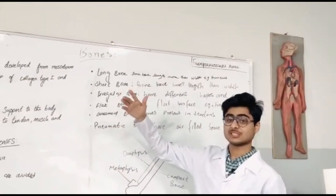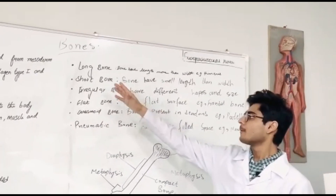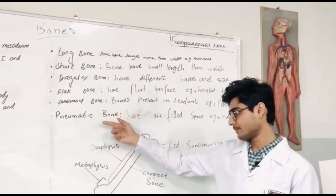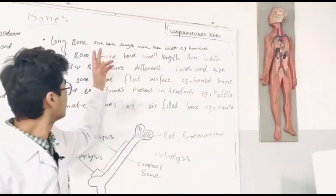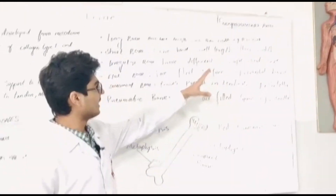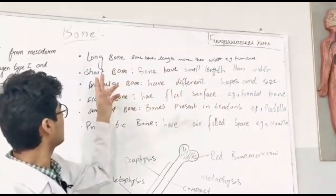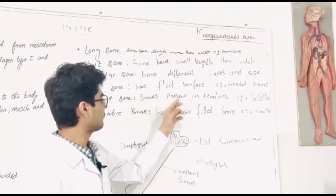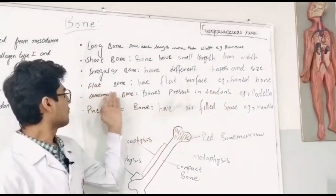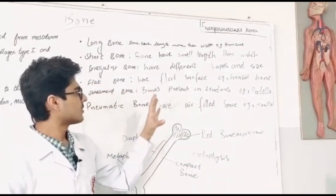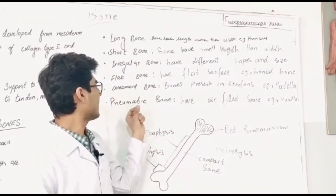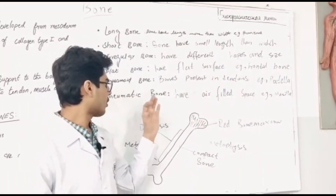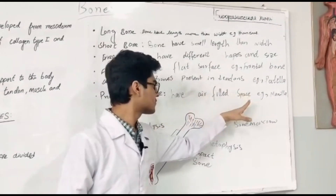The categories of bone are: long bone, which has more length than width (e.g., humerus); short bone, which has smaller length than width; irregular bone, which has different shapes and sizes; flat bone, which has a flat surface (e.g., frontal bone); sesamoid bone, which is present in tendons (e.g., patella); and pneumatic bone, which has air-filled spaces.